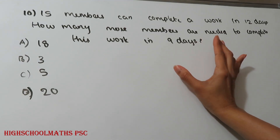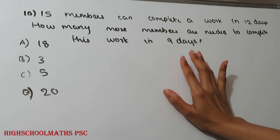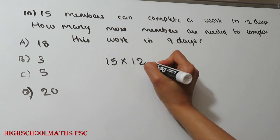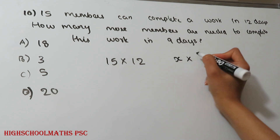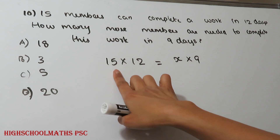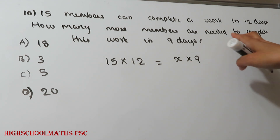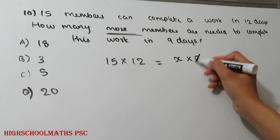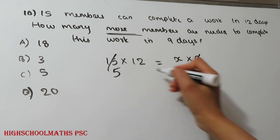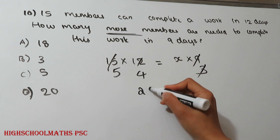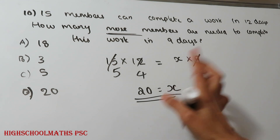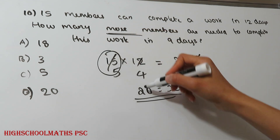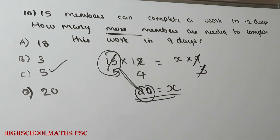Question: 15 members can complete a work in 12 days. How many more members are needed to complete this work in 9 days? Using the work formula: 15 multiplied by 12 equals the required members multiplied by 9. Required members: 3 times 3 times 5 equals 15, and 4 times 5 equals 20. More members needed: 20 minus 15 equals 5. Option C.